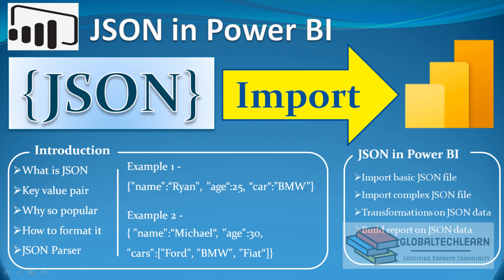JSON stands for JavaScript Object Notation. It is a standard text-based format for representing structured data based on JavaScript objects. It is mostly used for transmitting data in web applications or storing data in different platforms. In JSON, it usually has a key-value approach that makes it very easy to understand.